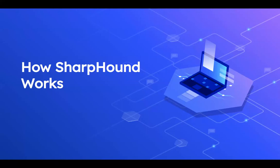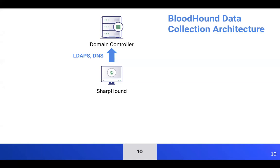Let's talk more about how SharpHound works. When preparing for this webinar, Jared brought up a good point: if you're going to detect something, you need to understand how it works — otherwise you'll necessarily have a naive approach no matter what you try. SharpHound's data collection architecture gets data from Active Directory, including endpoints joined to it. SharpHound typically runs on a compromised system during a red team engagement or penetration test.